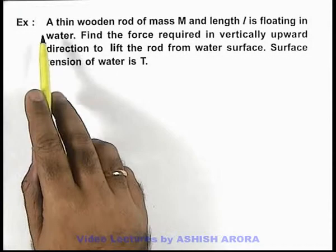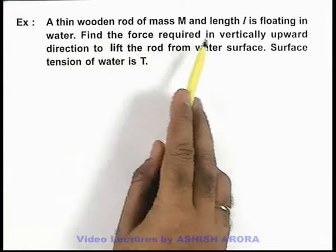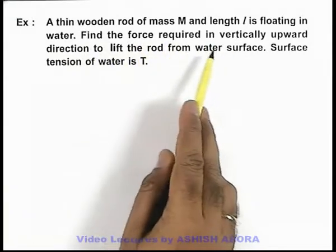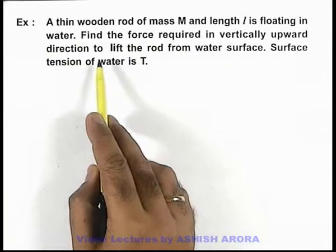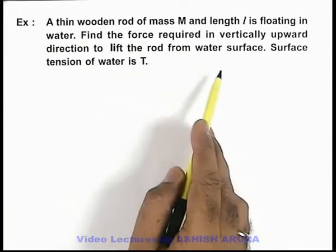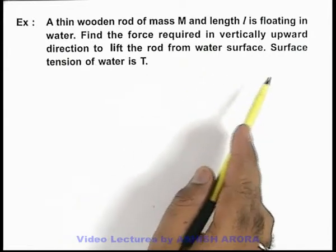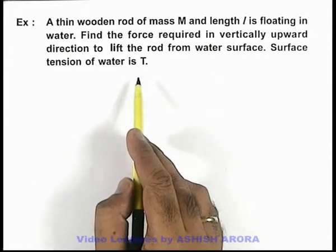In this example we are given that a thin wooden rod of mass M and length l is floating in water, and we are required to find force required in vertically upward direction to lift the rod from water surface. In this situation we are also given that the surface tension of water is T.